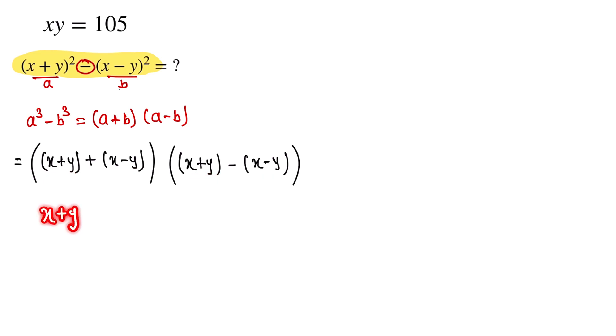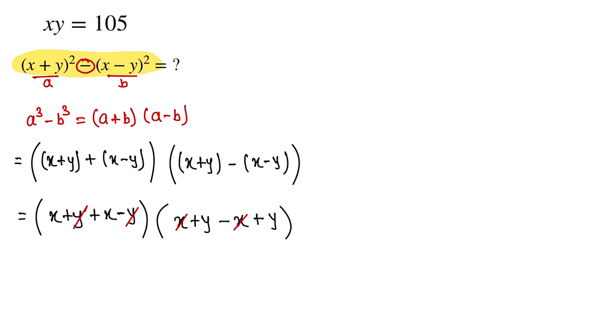So here is x+y+x-y into x+y-x, and this one is +y. Now here is minus and this one is plus, so this one is canceled out, and this one is canceled out. x and x are 2x, and y and y are 2y.